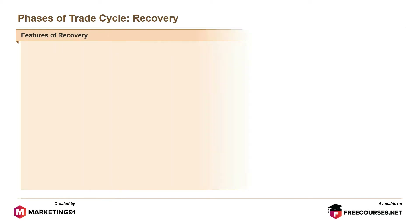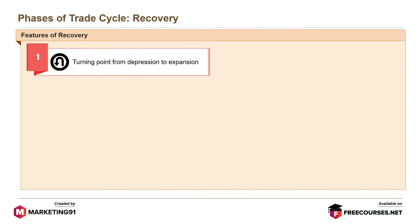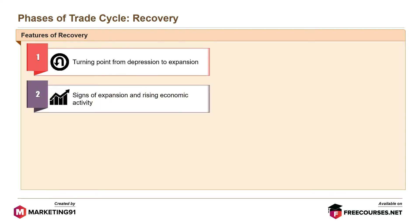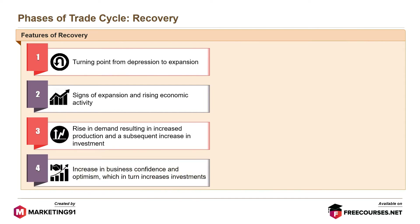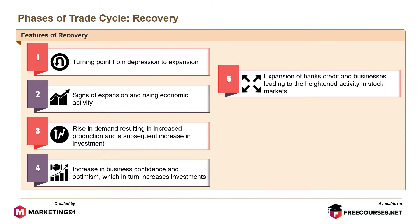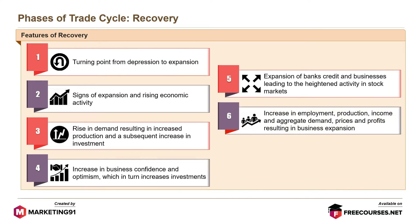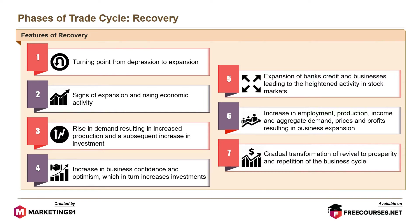Next is the recovery phase. Features of the recovery phase are: turning point from depression to expansion; signs of expansion and rising economic activity; rise in demand resulting in increased production and subsequent increase in investment; increase in business confidence and optimism, which in turn increases investments; expansion of banks' credit and businesses leading to heightened activity in stock markets; increase in employment, production, income, and aggregate demand; rising prices and profits resulting in business expansion; and gradual transformation of revival to prosperity and repetition of the business cycle.